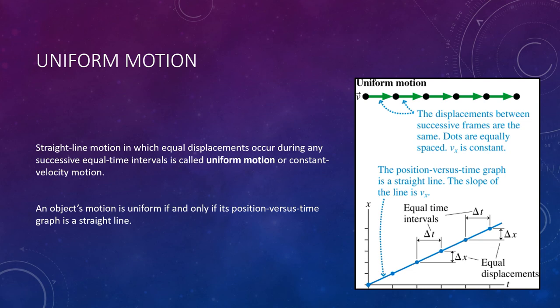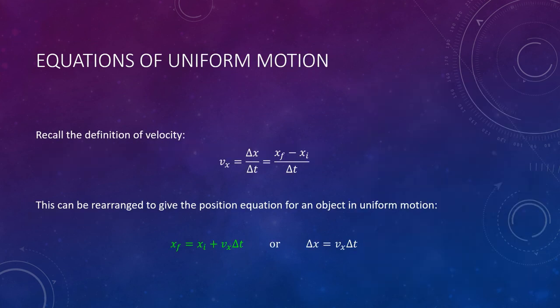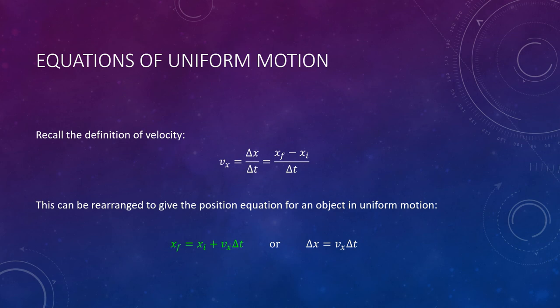We can revisit our definition of velocity and use it to give us new information. By definition, velocity is delta x — displacement — over delta t, the time interval. Note that we're using x's here to indicate horizontal motion; for vertical motion, we would use y's. Displacement, or delta x, is the difference between your initial and final positions. This is just the definition of velocity written out in full.